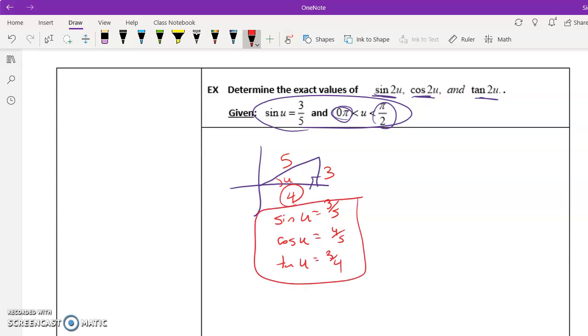So we're going to find the sine of 2u. And so remember that formula is 2 sine of u, cosine of u. Well, I know that's what we're trying to find. Okay, so I know that the sine of u is 3 fifths, and the cosine of u is 4 fifths. And so I'm just going to multiply everything together. Let's see, 3 times 4 times 2, that's 24 over 25.